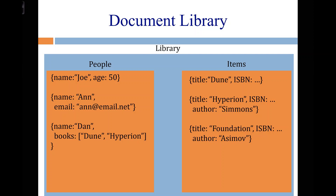The way we say Joe has no books checked out is by just not having anything called 'books' in his document. Dune doesn't have an author — maybe we don't know the author of some book. There's no structure here, no schema — just JSON objects. The only thing relating people is that they are in a collection called 'people.' In reality, you'd probably have some common fields across documents. Name would be the key for people, and ISBN would be the key for items. We only need two collections now, because the way to say someone checked out a book is just to add something to that person's document.